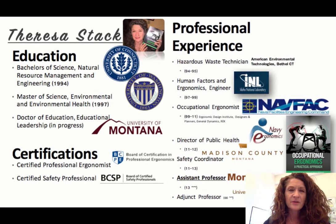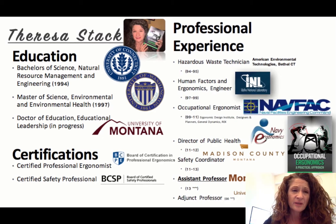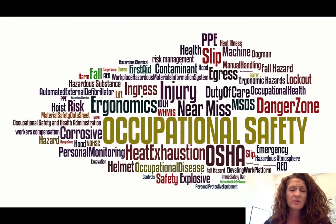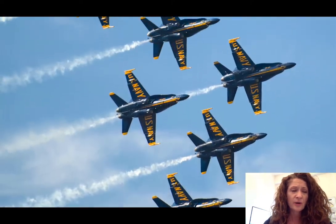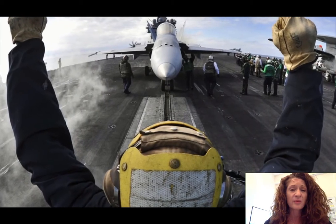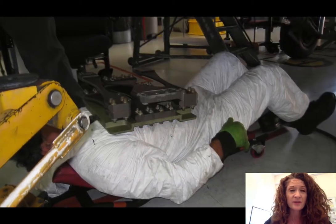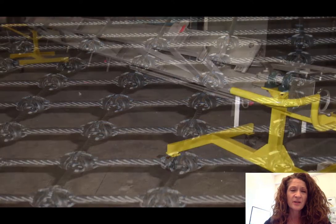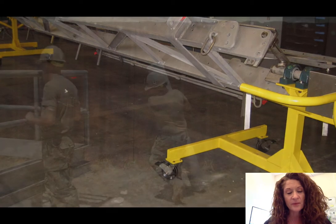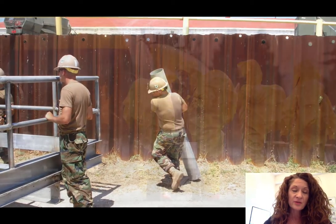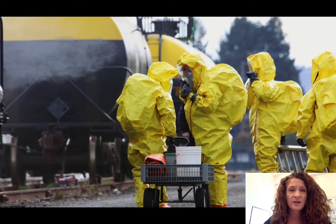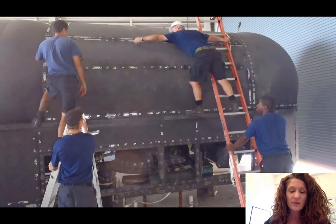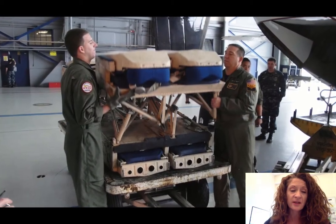I thought I'd briefly introduce myself, although I'm sure most of you have had me in a class before. I'm an associate professor at Montana Tech. I've been here since 2013. I'm also the Bachelor of Science Occupational Safety and Health Program Manager and the Coordinator for our three ABET programs. I have a Certified Safety Professional and a Certified Professional Ergonomist designation. I have a master's degree from the University of Washington in occupational and environmental health and a bachelor's degree from the University of Connecticut in natural resource management and engineering. Most of my career has been with the United States Navy supporting their mishap prevention and hazard abatement program. I teach both undergraduate and graduate level classes here at Montana Tech.